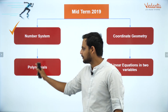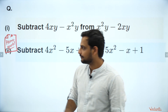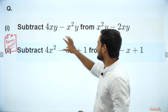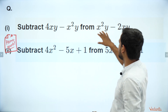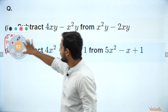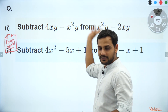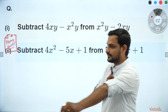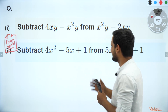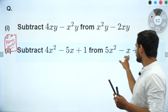Number system has already been covered and we are continuing with polynomials. Yesterday there was a mistake in the question: subtract 4xy minus x²y from the given part. What I did was subtract it in the wrong order — it was inverse. So those of you who gave me the correct answer understood the mistake. It was an English mistake which I didn't notice.